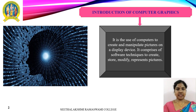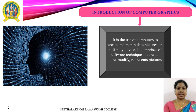Computer graphics is a combination of two words: computer and graphics. Computer graphics is the art of drawing pictures, lines, charts, etc. using a computer with the help of programming. A computer graphics image is made up of a number of pixels. A pixel is the smallest addressable graphical unit representable on the computer screen.